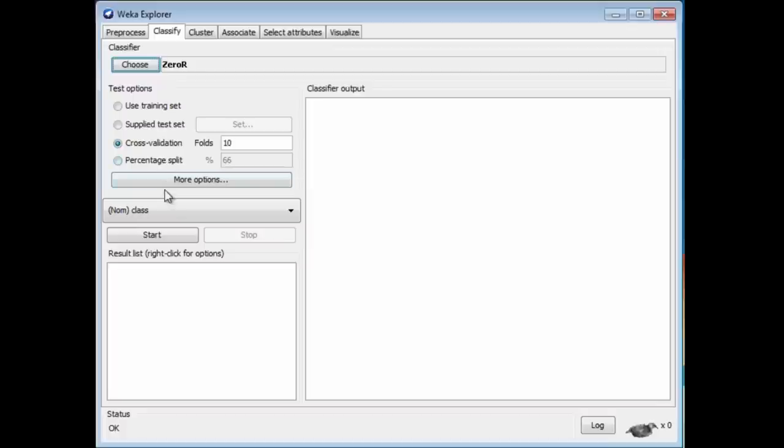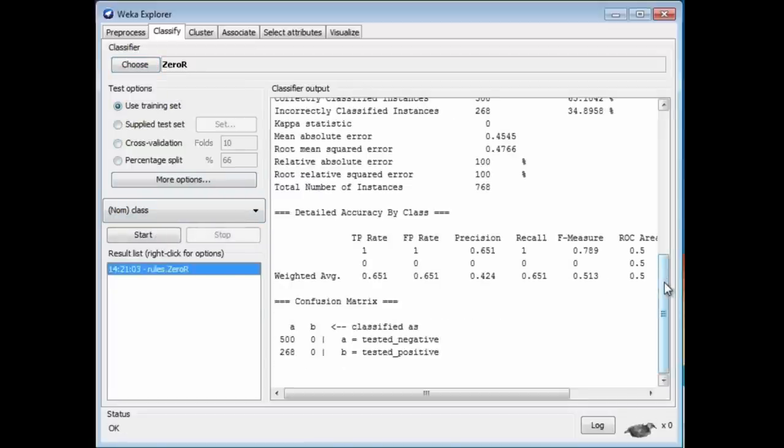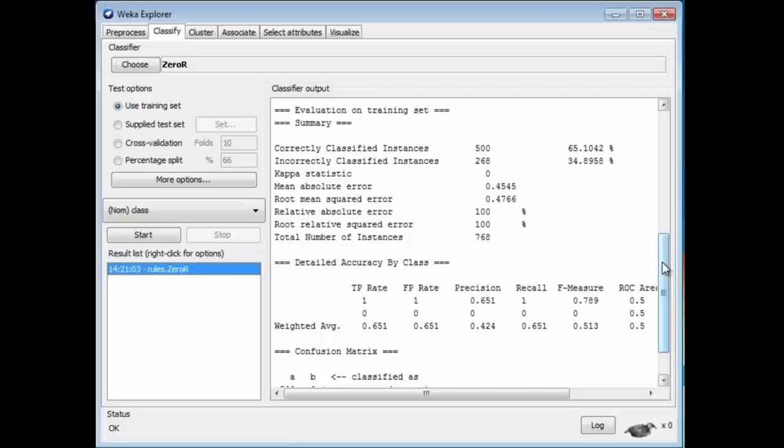If I just run that, it'll evaluate it using cross-validation. Actually, for a true baseline, I should just use a training set. That'll just look at the percentage of the chances of getting a correct result if we simply guess the most likely class, in this case 65.1%. That's the baseline accuracy. That's the first thing you should do with any data set.